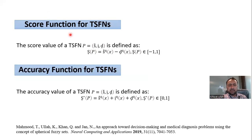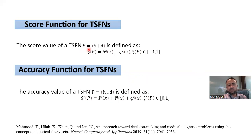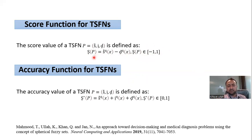Now we have the definition of score function and accuracy function of T-spherical fuzzy numbers. We use score functions when we need to rank two or more T-spherical fuzzy numbers. The score function of a T-spherical fuzzy number P = (S, I, D) is defined by a given expression, with range from minus 1 to 1. If the scores of two T-spherical fuzzy numbers become equal, we use the accuracy function to differentiate them, with range between 0 and 1.